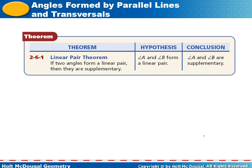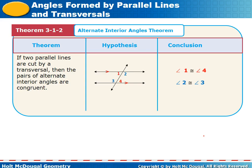The linear pair theorem states: if two angles form a linear pair, then they are supplementary — their sum is always 180 degrees. The alternate interior angles theorem states that if two parallel lines are cut by a transversal, the alternate interior angles are congruent. For example, one pair is on alternate sides of the transversal and inside the parallel lines, and another pair — angles three and two — are also alternate interior angles and are congruent.